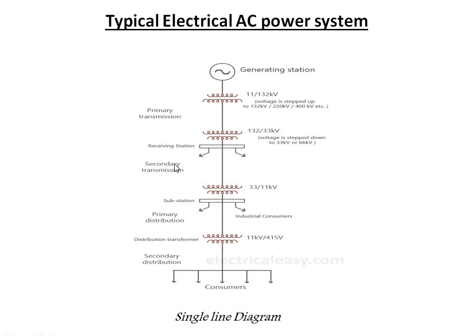This single line diagram can be divided into two phases: the first phase covers primary transmission and secondary transmission, and the second phase covers primary distribution and secondary distribution. After transmission, the power goes to the receiving station where a step-down transformer reduces voltage from 132 kV to 33 kV, or it may be 66 kV. In the primary distribution stage, the voltage is again stepped down from 33 kV to 11 kV. At the distribution side, the voltage level is decreased, whereas at the transmission side it is increased, which reduces losses and is more economical.